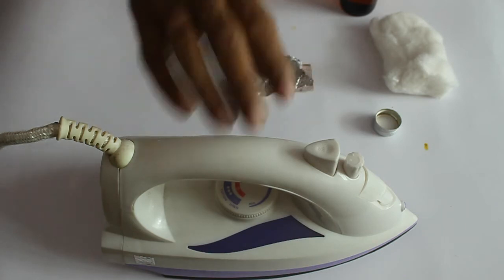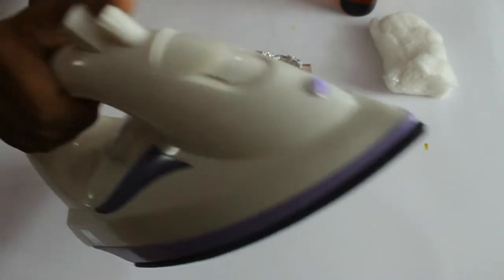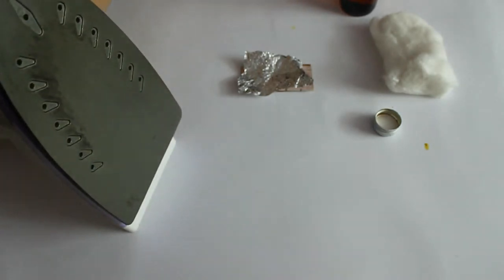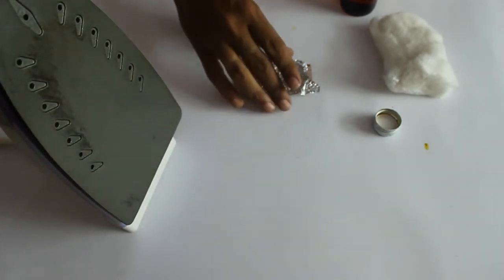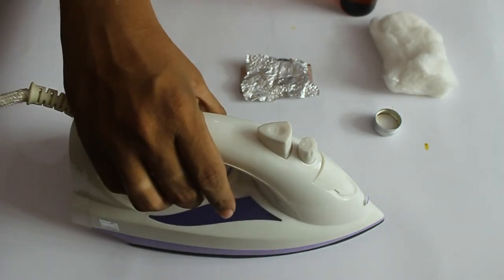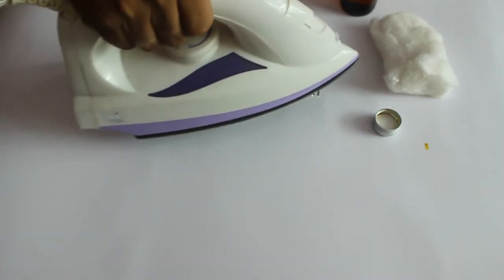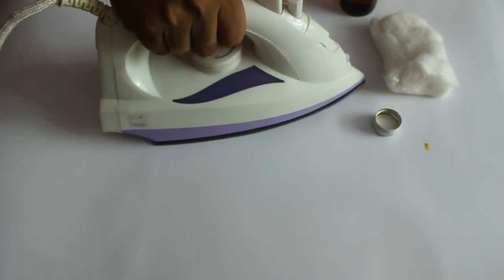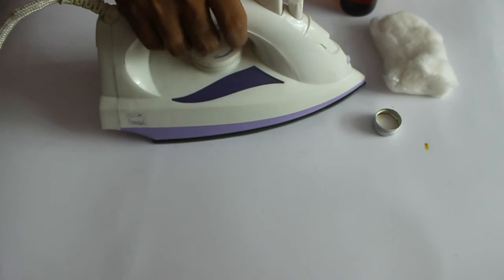This is an iron box. Take the iron box, put the copper clad on that, set it to maximum temperature, and heat for 5 to 10 minutes.